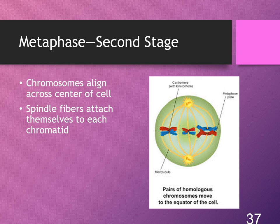The second stage in the process of mitosis is metaphase. When metaphase begins, the centromeres have migrated to opposite poles of the cell and the spindle fibers have attached themselves to the centromeres of the chromosomes.